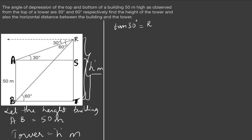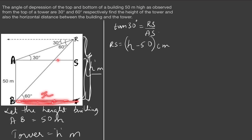Starting with tan 30: tan 30 = opposite/adjacent = RS/AS. RS is h − 50, and since AS equals x (the horizontal distance), we substitute: tan 30 = 1/√3 = (h − 50)/x. This is equation 1.